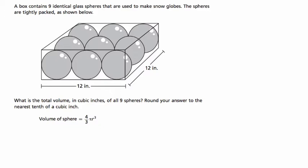So all nine spheres, I want to underline that because I'll forget that, and they're giving us the formula for the volume of the sphere. They're also telling us that it's 12 inches across these three spheres, and when they say they're tightly packed, you can tell what they mean is there's no space between those spheres.